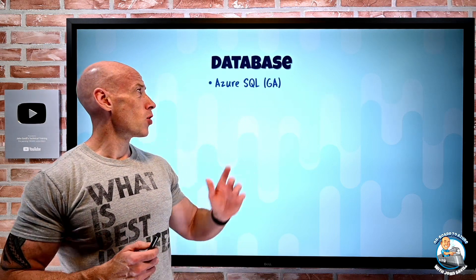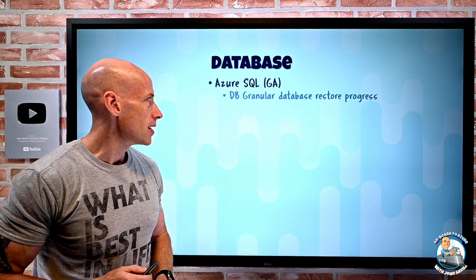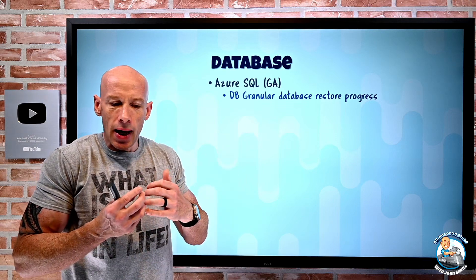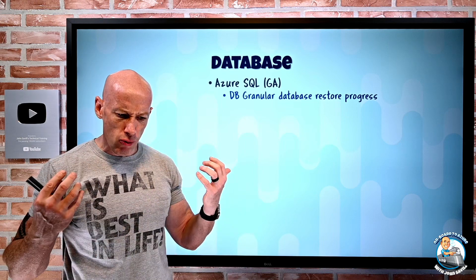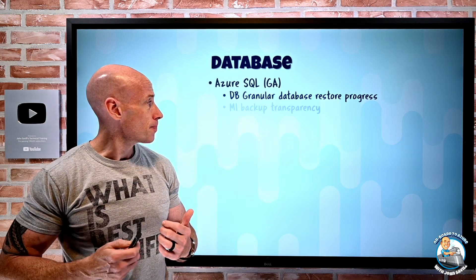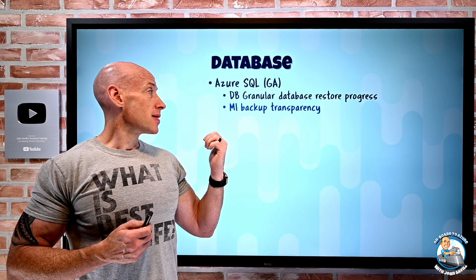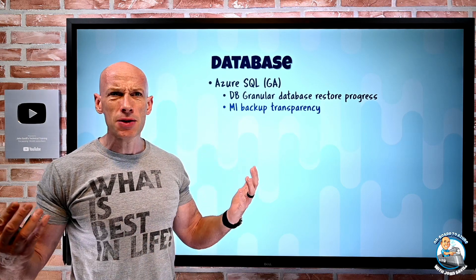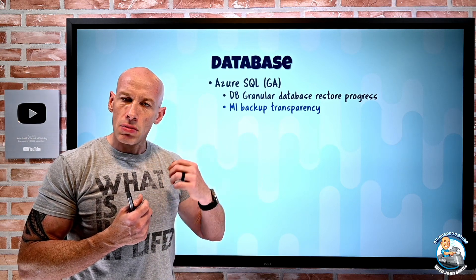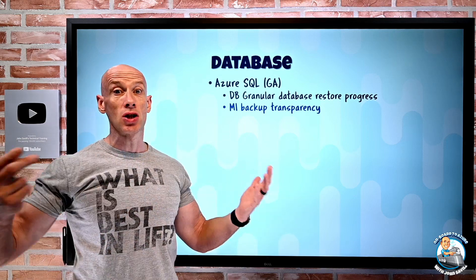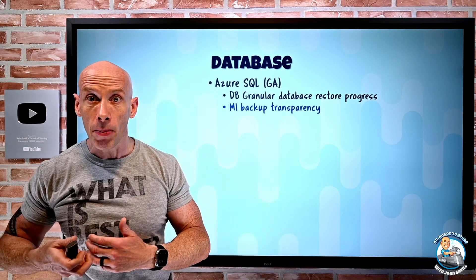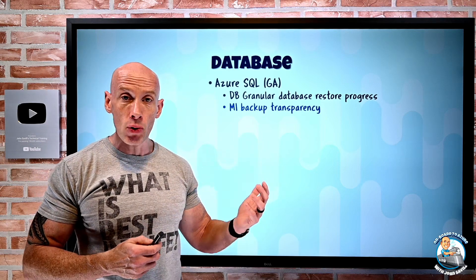There's a huge number of database announcements all around Azure SQL, and all of these are GA announcements. First, granular database restore progress — you can now query the percent_complete column from the dm_operation_status dynamic management view, which will show between 1 and 99 how far along that restore progress is. Azure SQL Managed Instance now has backup transparency, letting you get information from a table about manual and automated backups — the type of backup (full, differential, log), the time, the status, and which replica was used to back up.